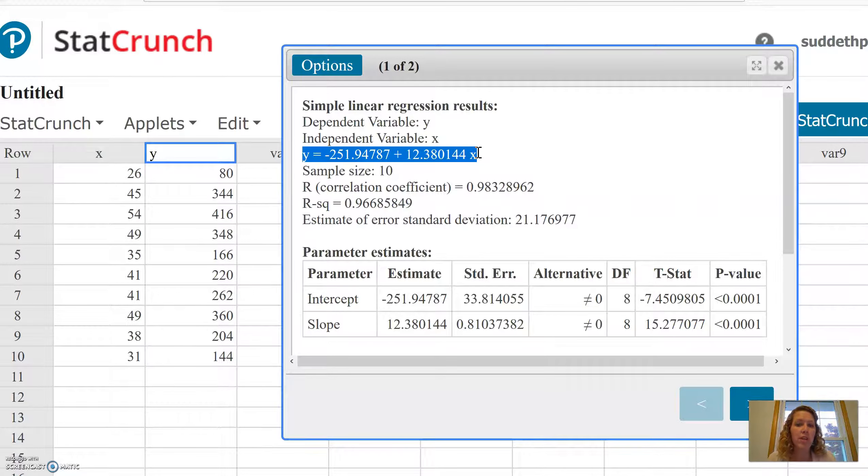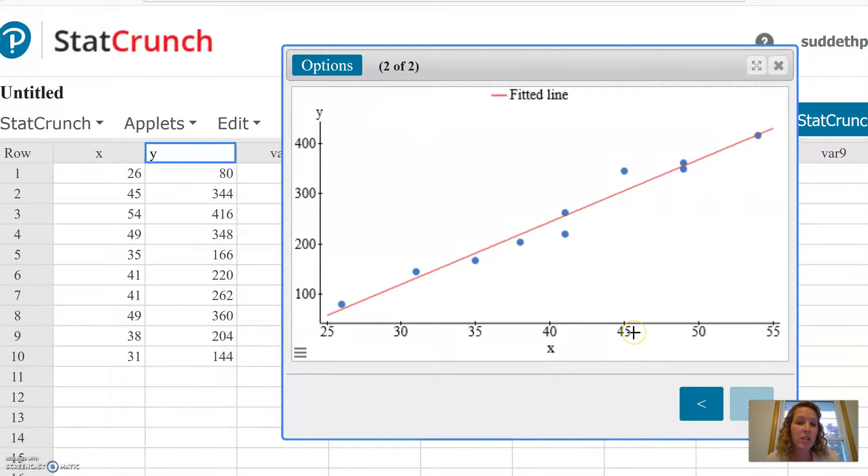Remember, I can rewrite it in that order, or I can put the 12.380144x first. Just make sure the x goes with the 12. Also, while we're on the screen, if you go to the right arrow, you can see that the dots here are close to the line. So we knew there's a pretty good strong correlation since the dots are fairly close to that line.